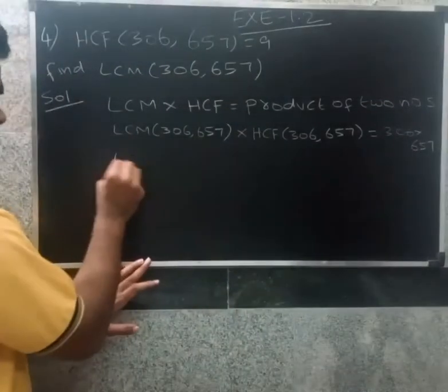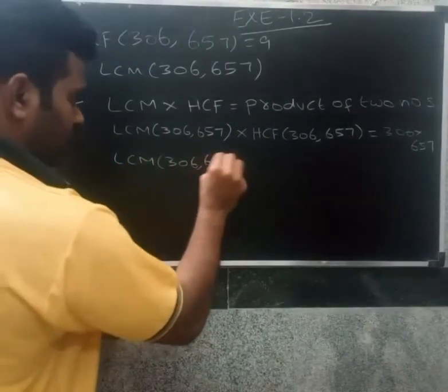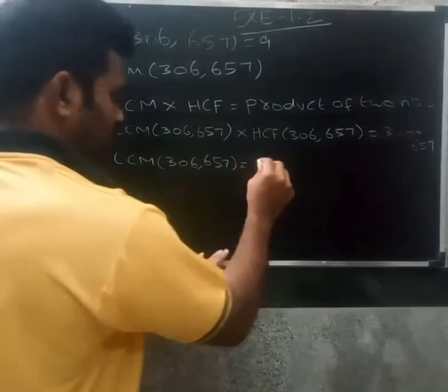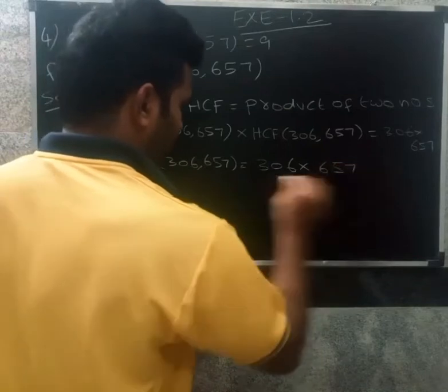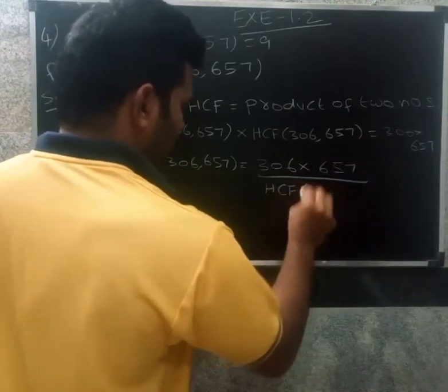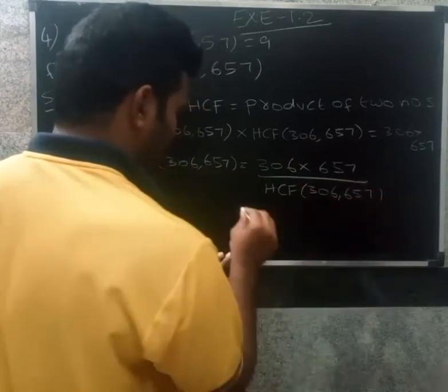If we are going to find the LCM of 306, 657 with the value of HCF being 9. 306, 657. Okay, now we are going to do the calculation.